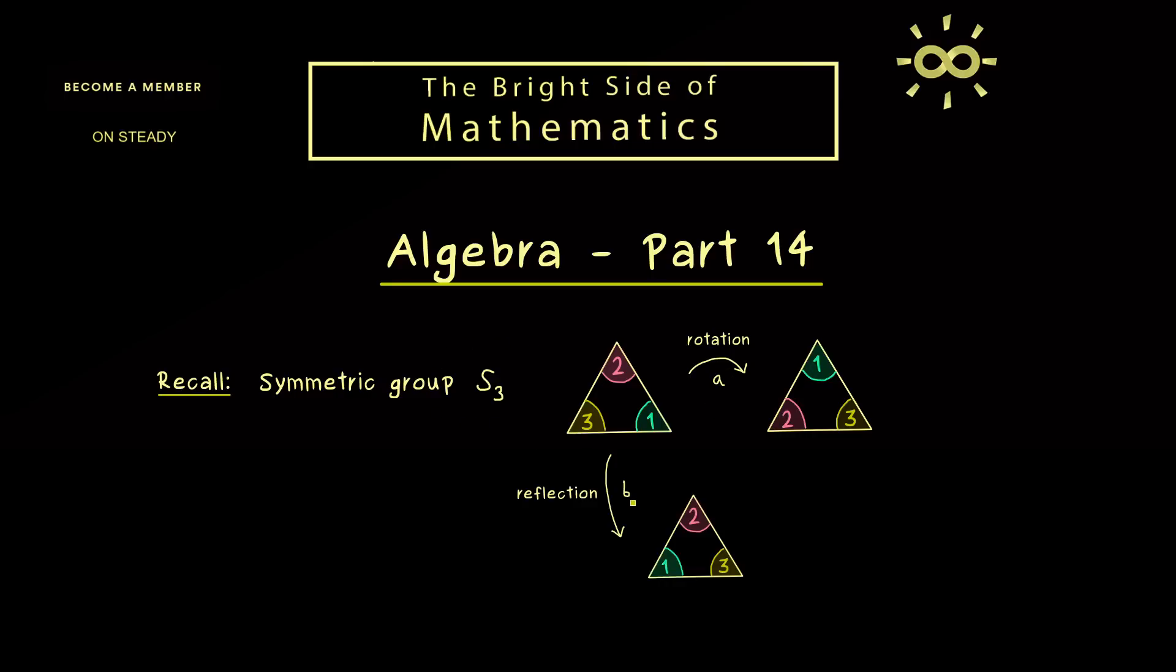However, we only need 2 elements to generate the whole group. For example, we can fix one rotation operation A and one reflection operation B and then we get all the elements back with the combinations of A and B. So we would write that S3 is generated by A and B.